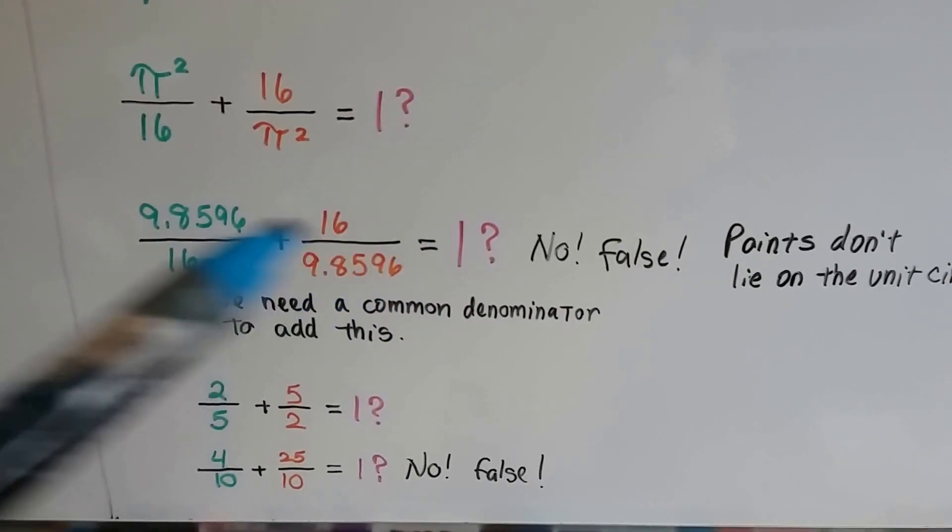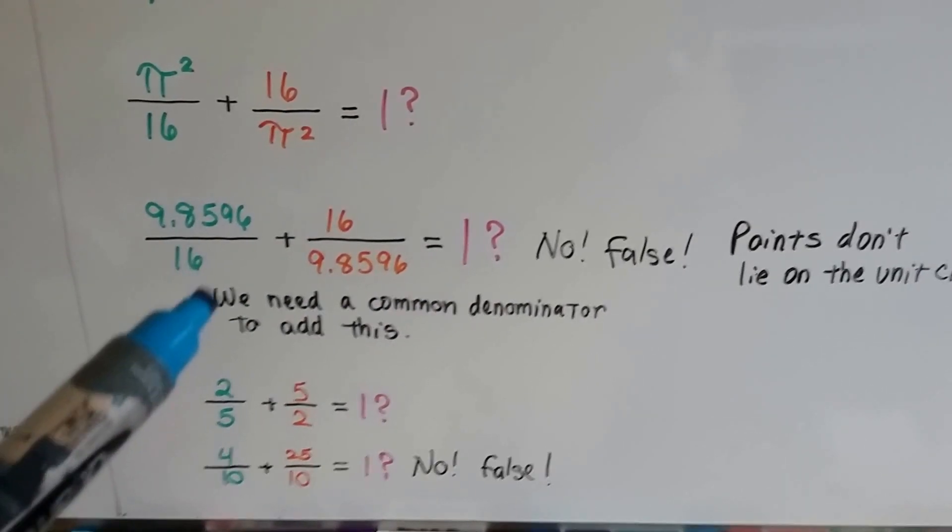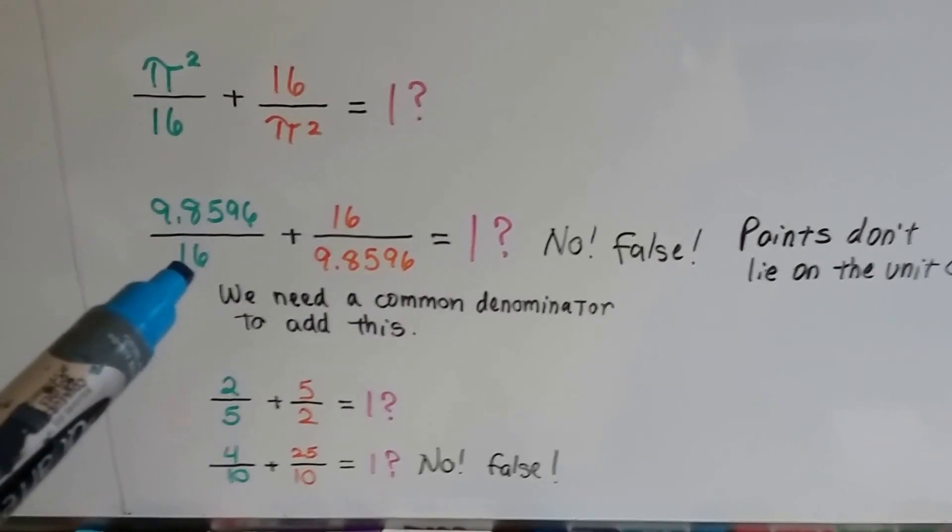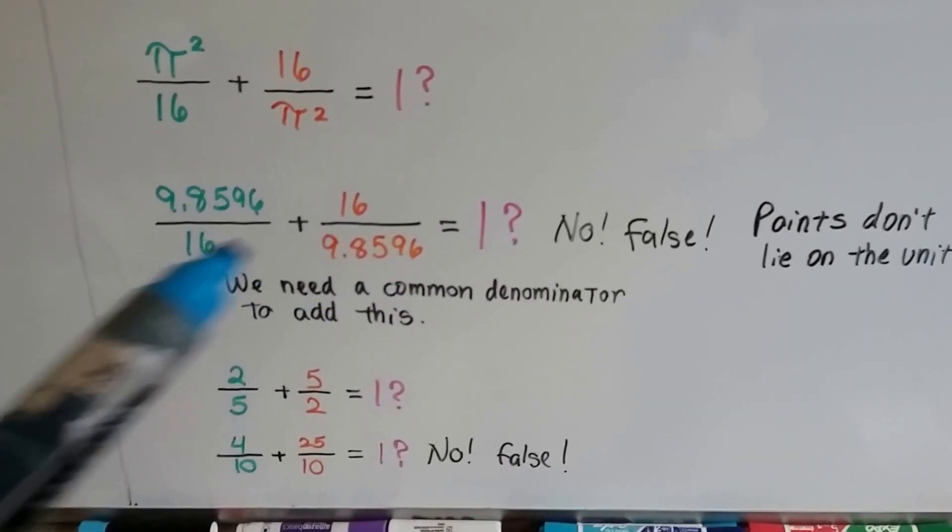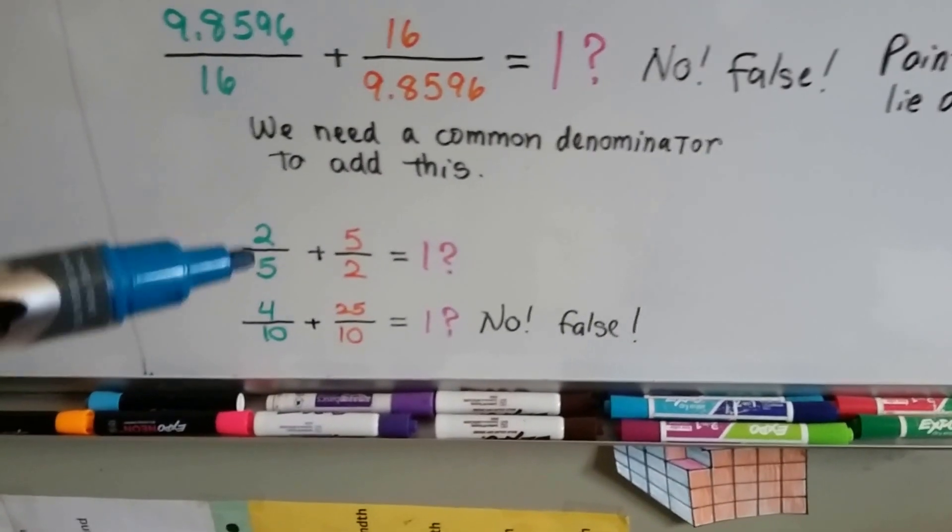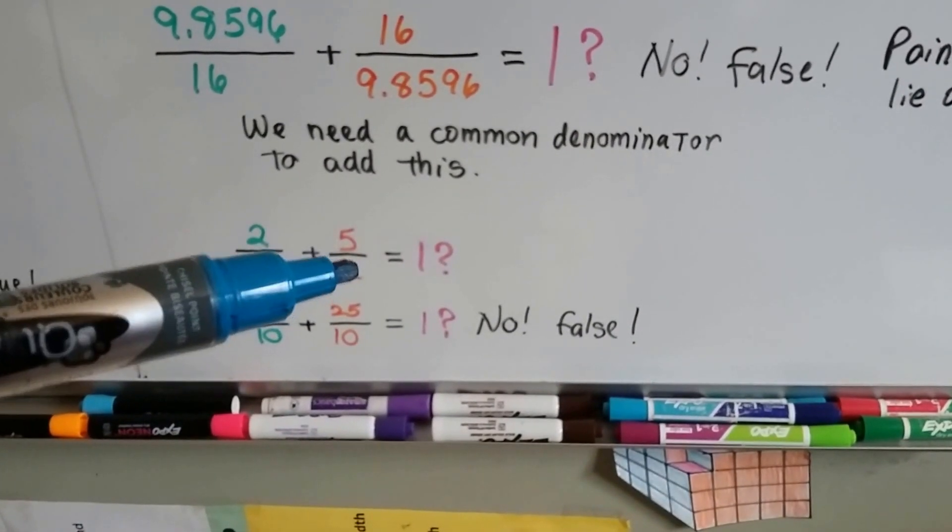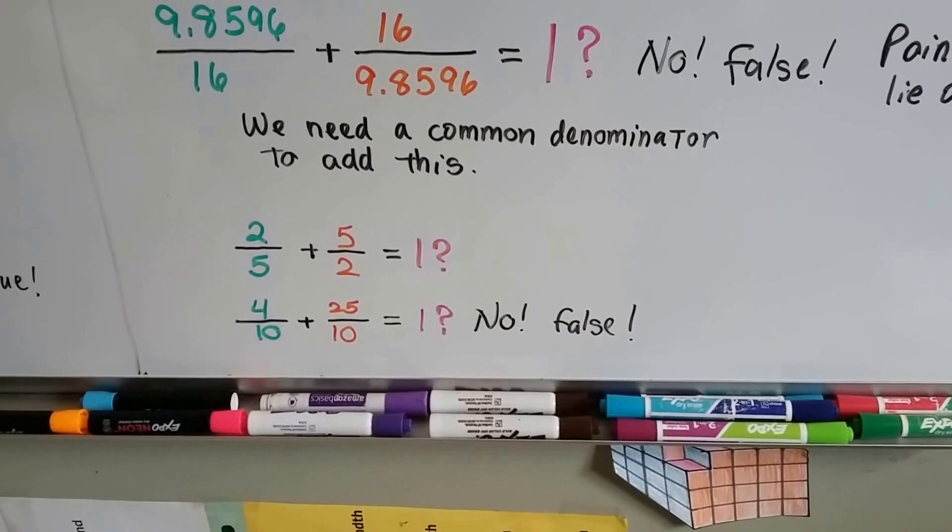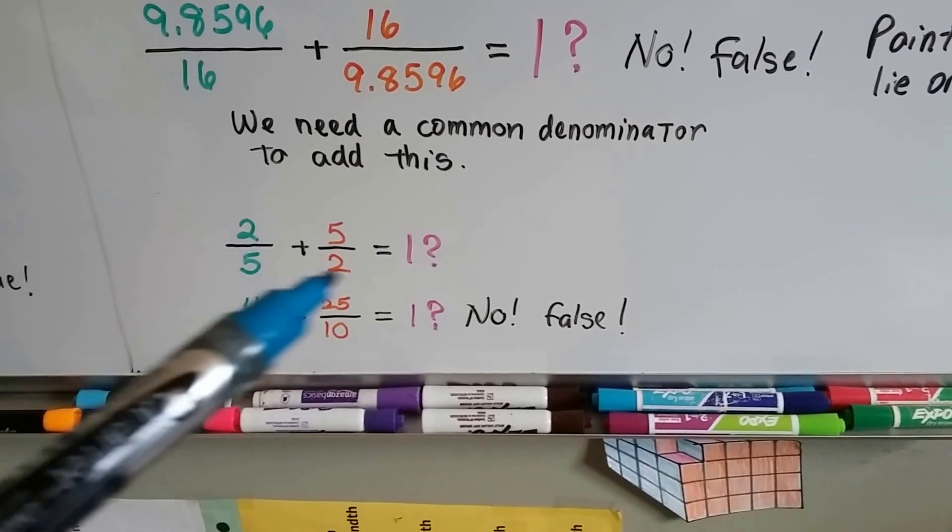Now, when we add these, we need to find a common denominator to add fractions, remember? To add rationals. So, take a look at this one. If we had 2 fifths plus 5 halves, would that equal a 1? Well, no, because we need to find a common denominator, and it can meet at 10.